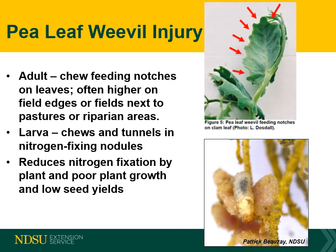Adults feed on the early clam leaves causing a symmetrical pattern of half-moon notches. This leaf feeding by the adult typically does not result in yield loss because the crop usually compensates and recovers. However, larvae feeding on the nitrogen-fixing bacteria within the root nodules causes significant damage. This damage reduces soil and plant available nitrogen for the current and future crops, resulting in poor plant growth and lower crop yields.